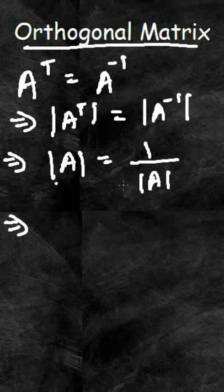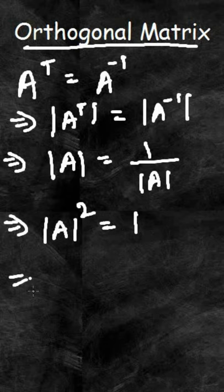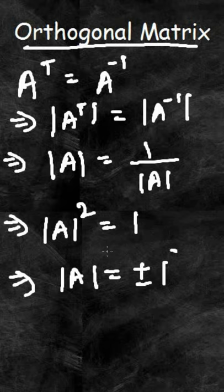Now if I take entire thing on the left hand side, what I get is determinant of A whole square is equal to 1. So now if I solve this, what I get is determinant of A is equal to plus minus 1.